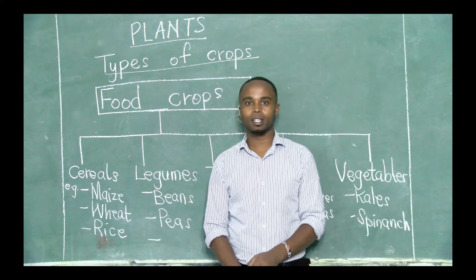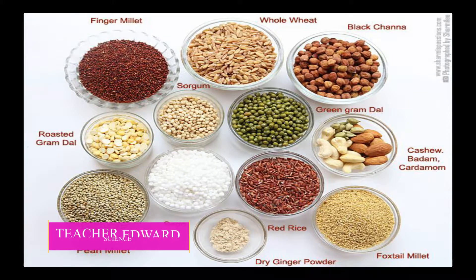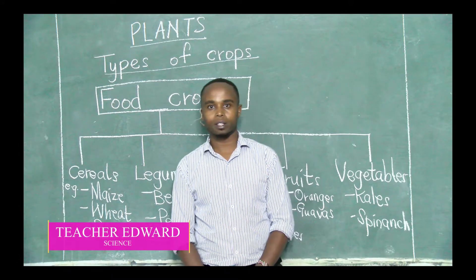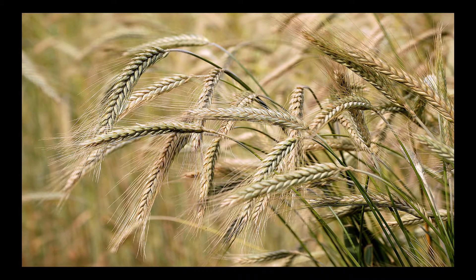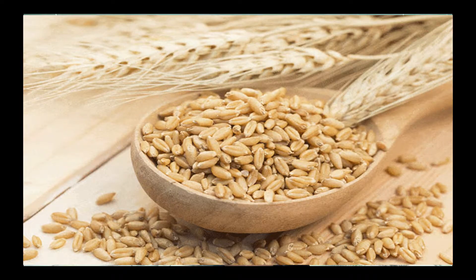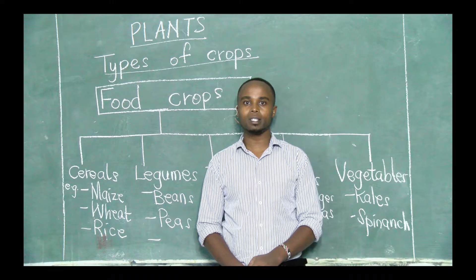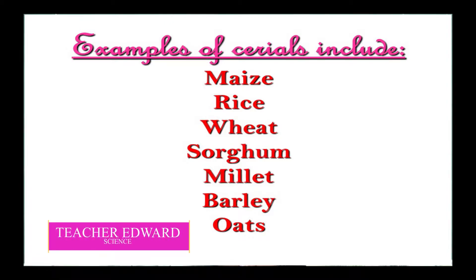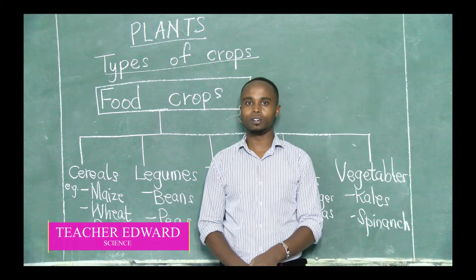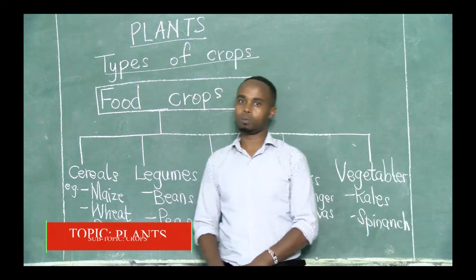Another good example is millet, which is almost similar to sorghum. Another example is barley — that is a barley plantation. Barley is used in brewing industries. So those are a few good examples of cereals. Once you are asked to name some cereals, talk about things like maize, rice, wheat, sorghum, millet, barley, and so on. They mostly provide us with flour.